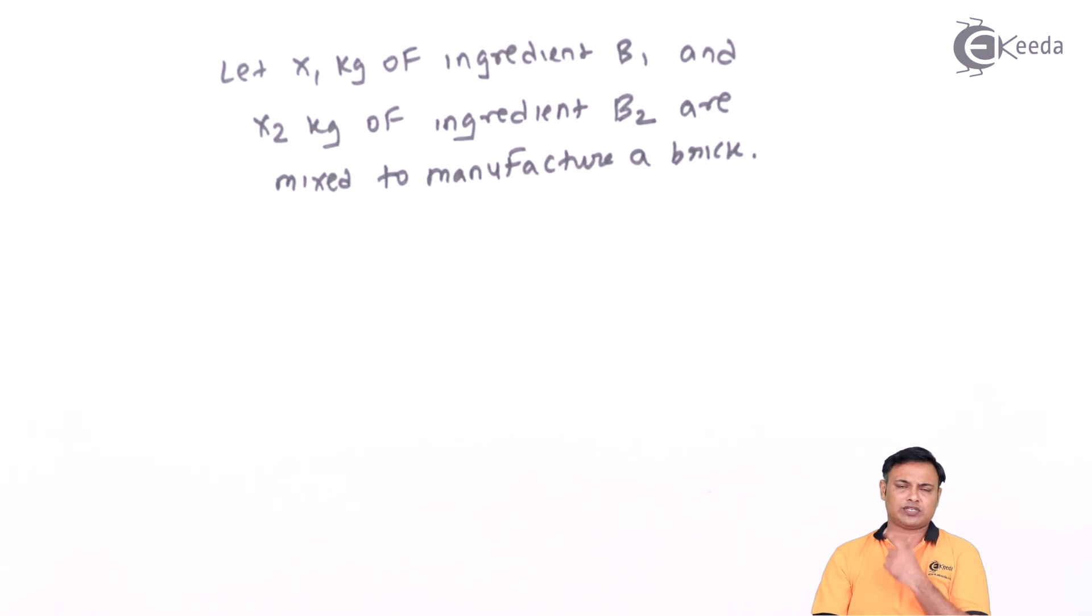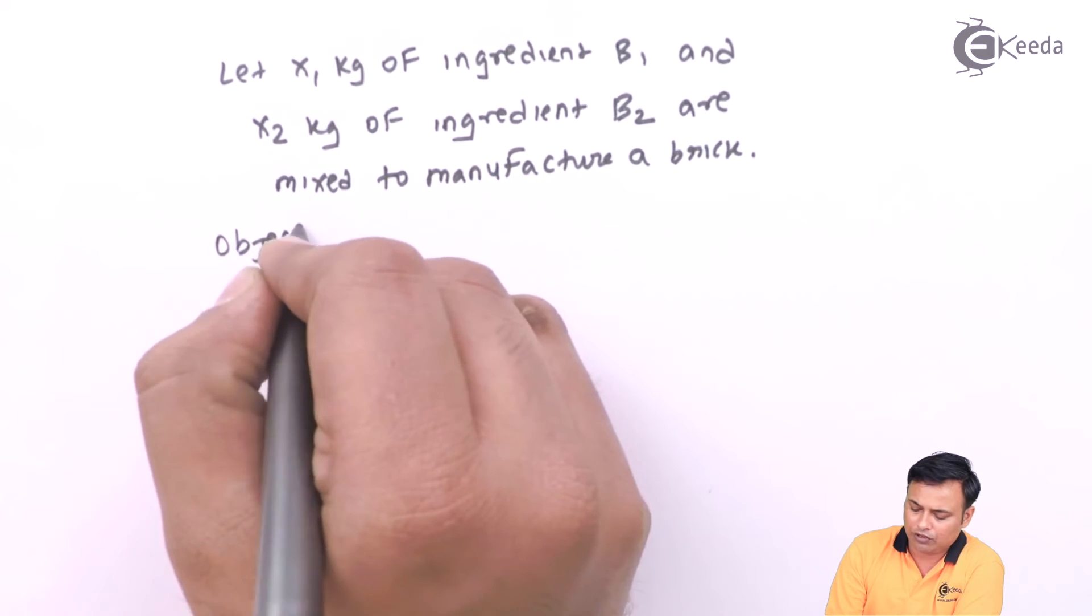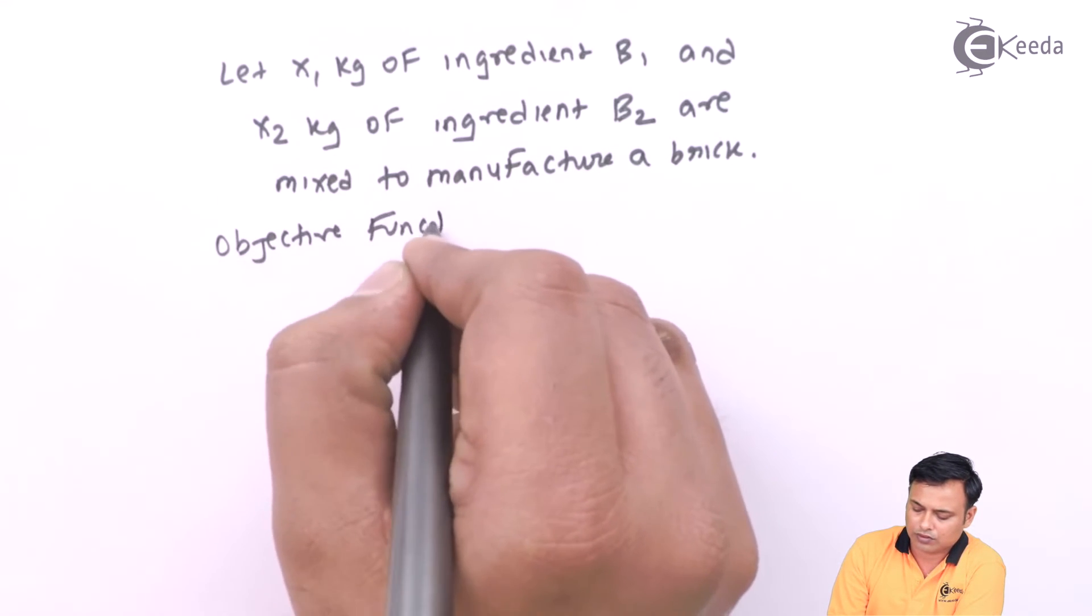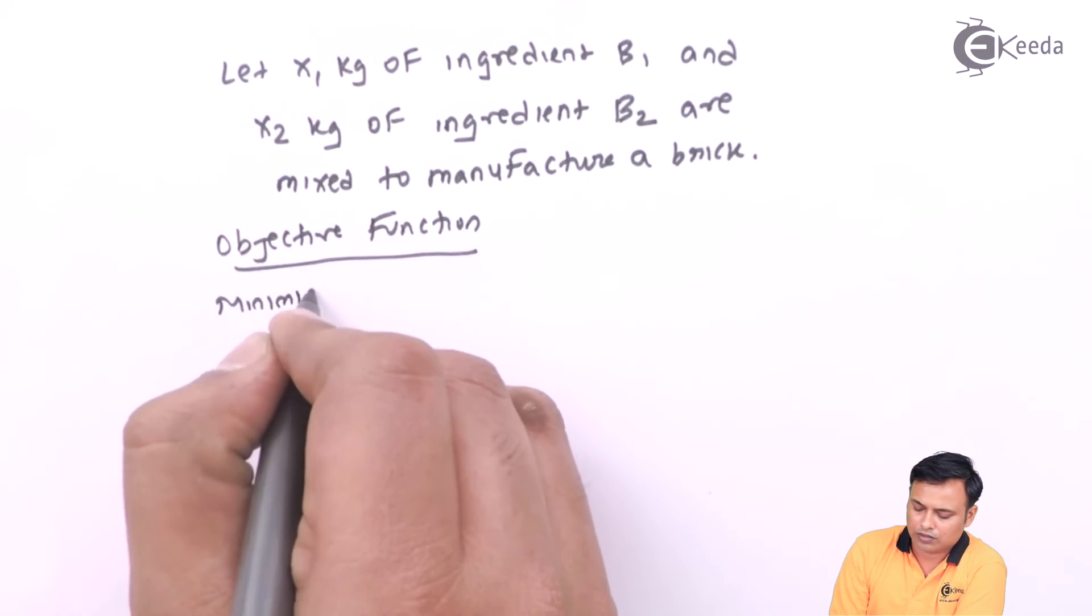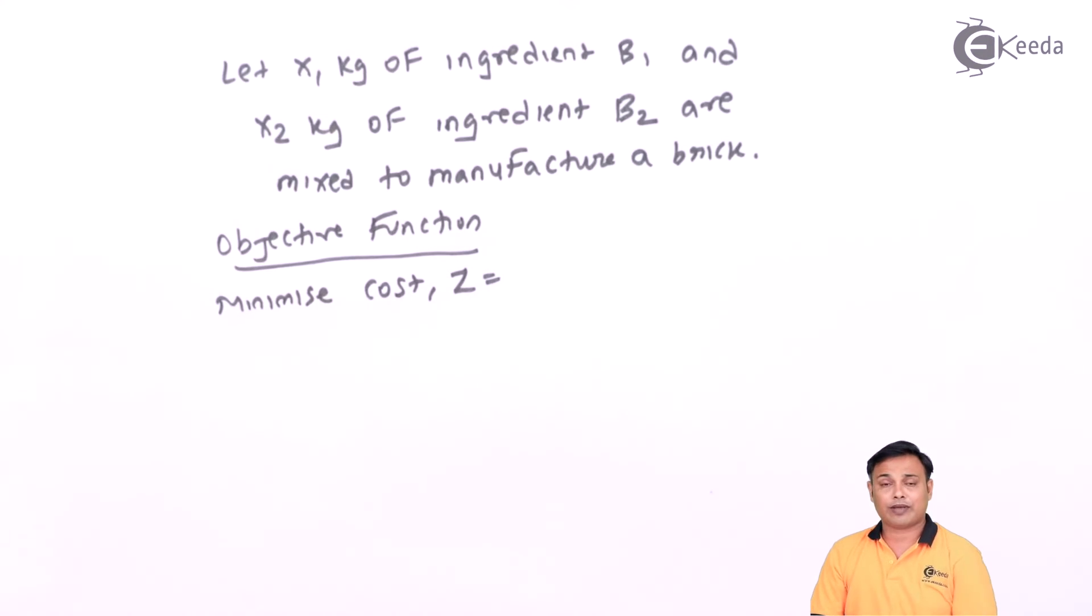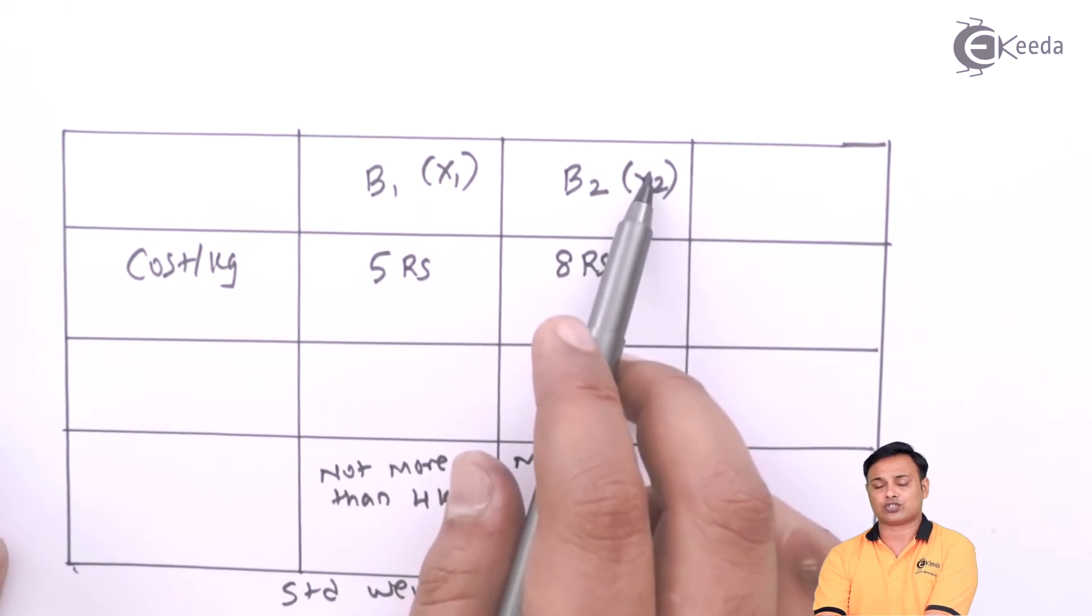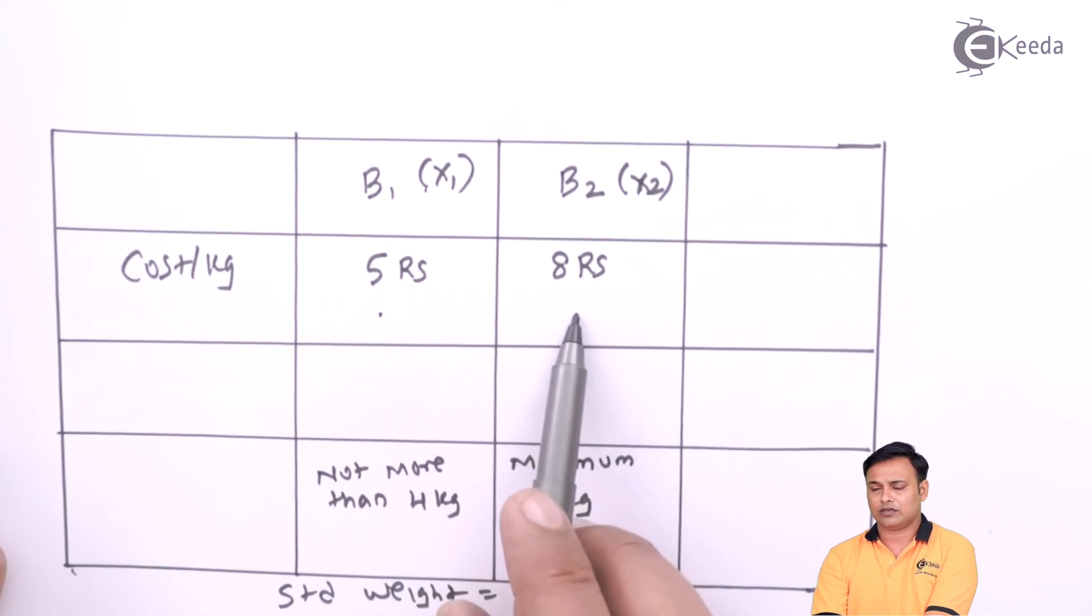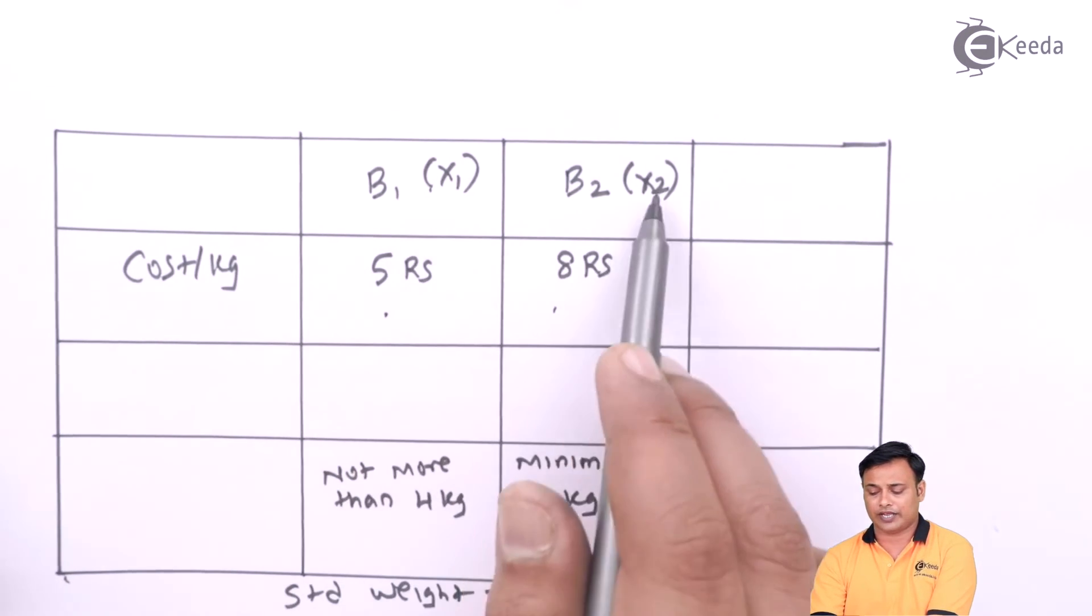We are mixing them to make a brick. So my objective function: minimize the cost. Minimize the cost, z. What shall be my cost now? My cost shall be 5x1 plus 8x2. 5 rupees per kg multiplied by x1. That is our assumption. It will be 5x1 plus 8x2.